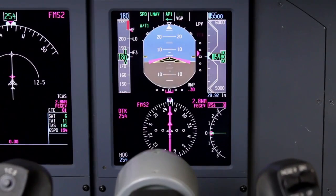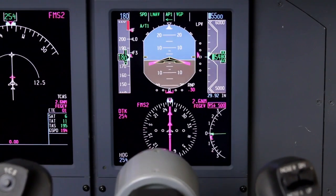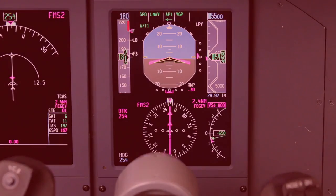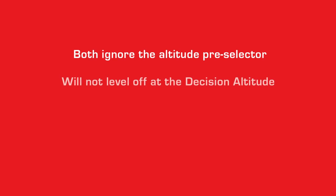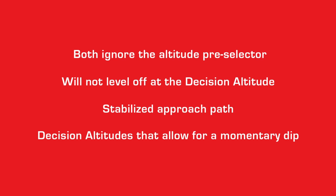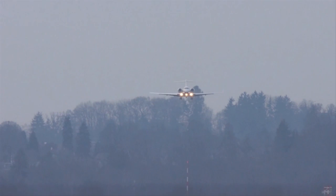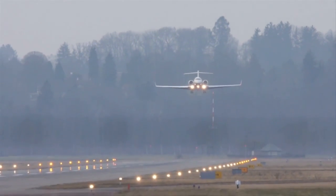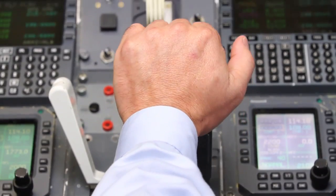The VGP mode and glide path during an RNAV LPV approach is similar to the ILS glide slope mode in the following ways: they both ignore the altitude pre-selector, they will not level off at the decision altitude, both provide a stabilized approach path and allow for standardized approach procedures, and they have published decision altitudes that allow for a momentary dip below minimums during a missed approach. As the aircraft reaches the LPV decision altitude, the pilot must either continue to land or initiate a missed approach.